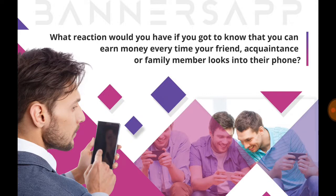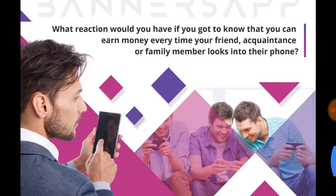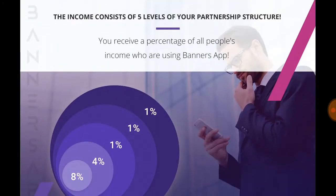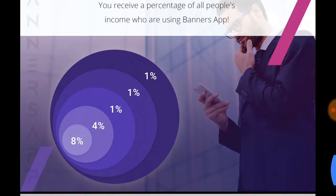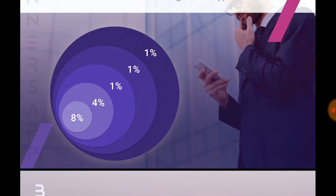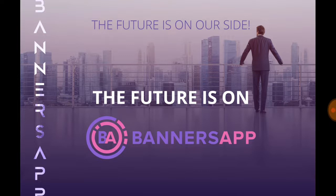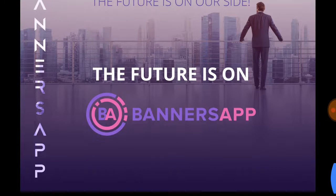Imagine earning money every time a friend or family member looks at their phone — locking and unlocking — you simply earn money. If you create a team, the income consists of five levels of your partnership structure. From the first level you receive eight percent, second level four percent, and third, fourth, fifth levels one percent each, paid weekly.